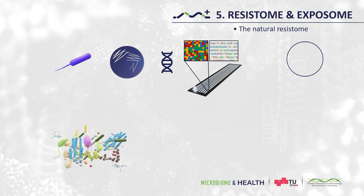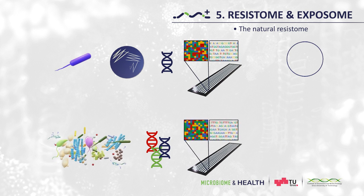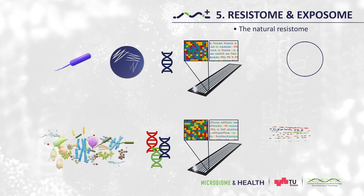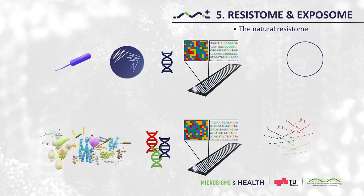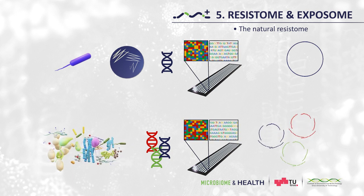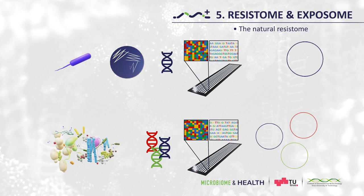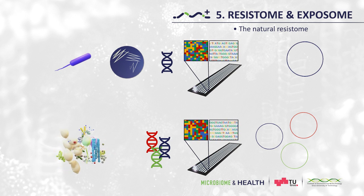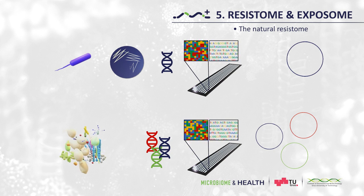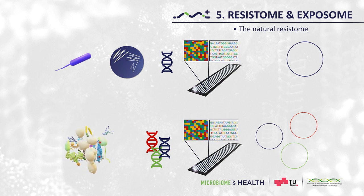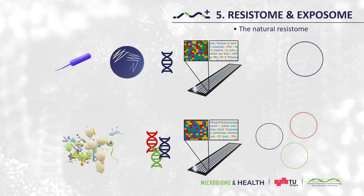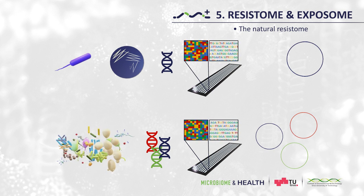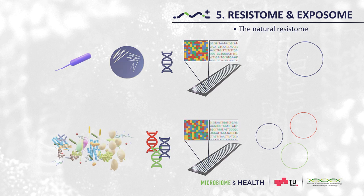Here, metagenomic sequencing provides a huge additional advantage. The DNA fragments of the whole microbiome can also be assembled, based on reference datasets, to whole bacterial genomes, which are then referred to as metagenome-assembled genomes, or MAGs. For these MAGs, the resistant genes can be identified without being dependent on cultivating those bacteria. Remember, so far we are only able to cultivate about 3% of all microbes.